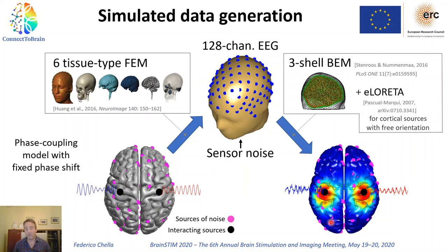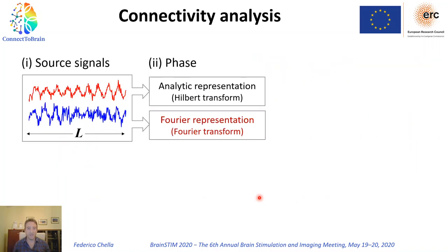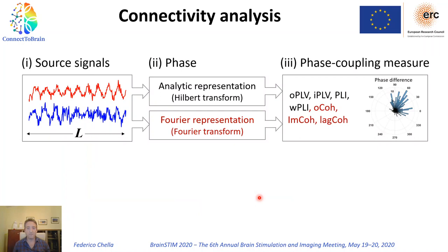In order to answer this question, we use simulations. We simulated the activity for pairs of interacting sources using a phase coupling model. We also simulated the activity of noisy sources as background brain activity. From the source signals, we simulated the EEG recordings and also added some sensor noise. We then went back to the source space by reconstructing the activity of the sources. From the reconstructed source activity, we estimated the phase of the signals and then phase-based connectivity metrics between these signals. There are two main approaches for the estimation of phase.